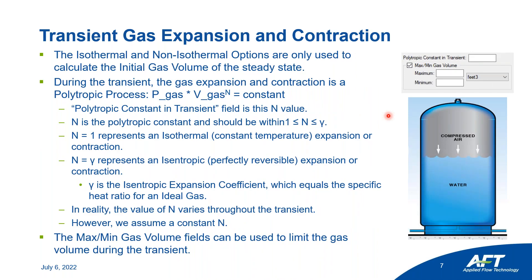The polytropic constant in transient is the n value in the polytropic process equation shown here. The polytropic constant should be between one and the isentropic expansion coefficient, where one represents an isothermal change and the isentropic expansion coefficient represents a perfectly reversible expansion. However, it's important to note that in AFD Impulse 9 we assume the polytropic constant does not change over time.